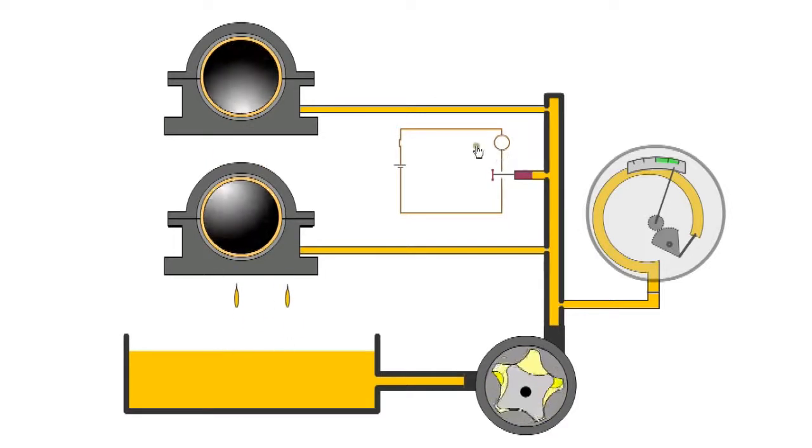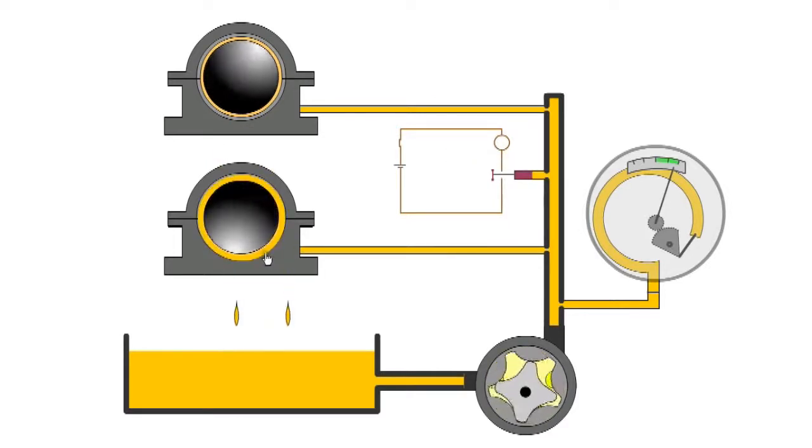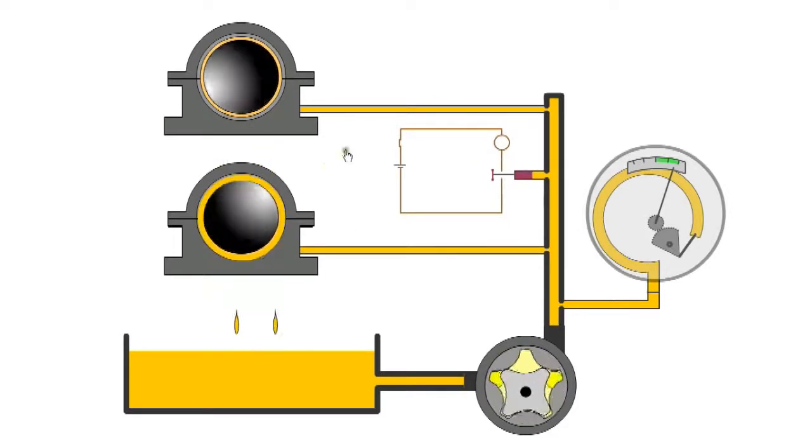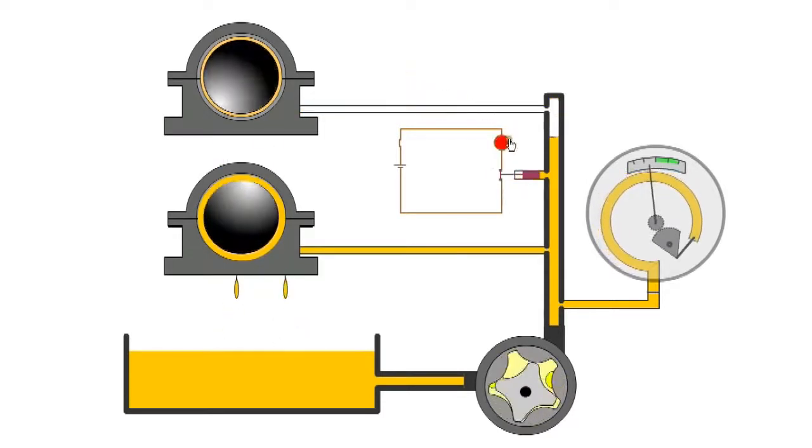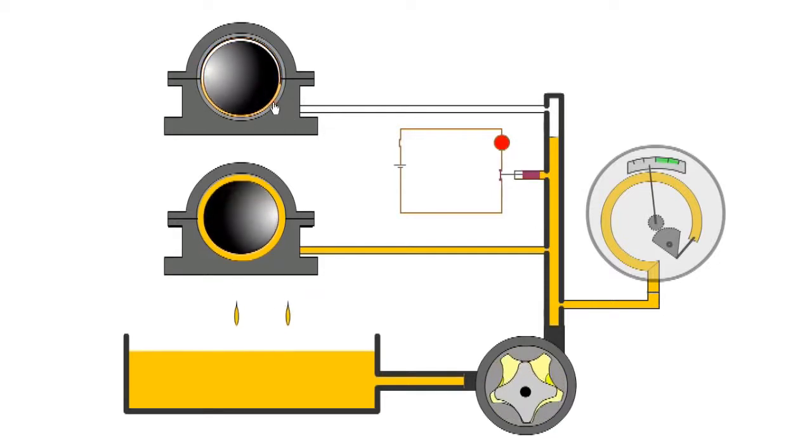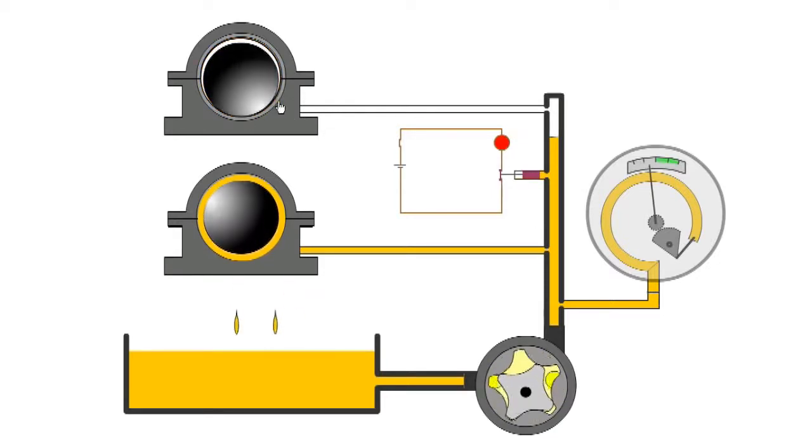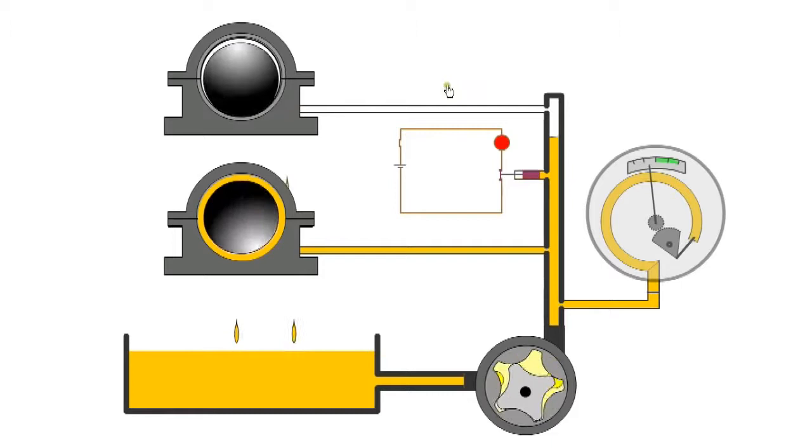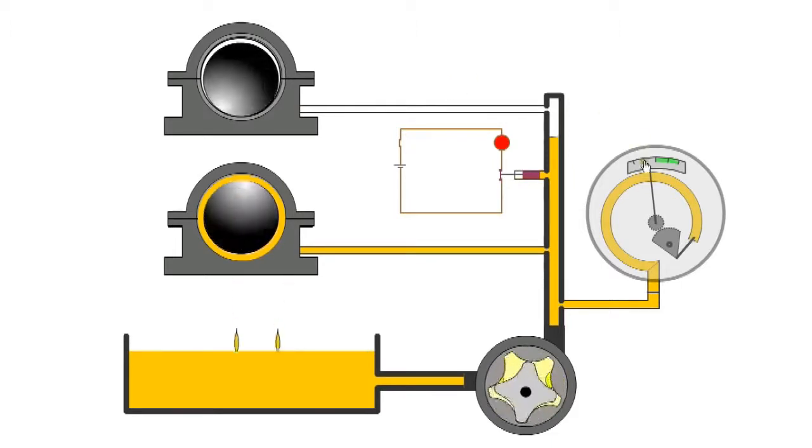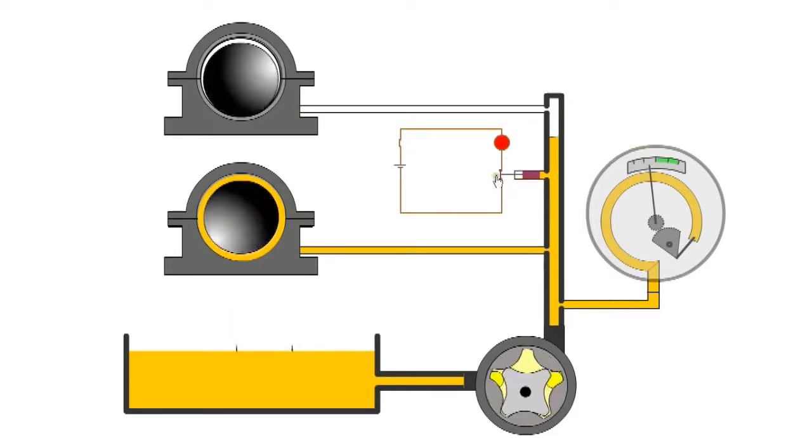If there is wear in a bearing the clearance will increase and there will be less restriction to the flow of oil. This will result in a drop in oil pressure. Without the correct pressure the oil will not reach the more remote bearings and they will be starved of oil. Now we have low oil pressure on the gauge and the pressure switch has activated alerting the driver via the oil warning light.